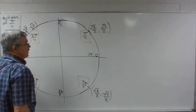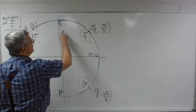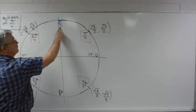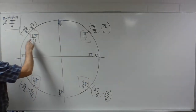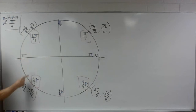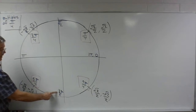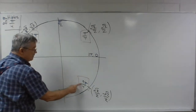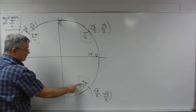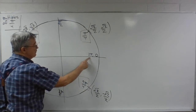If we work our way around the unit circle, we have pi over 4, 2 pi over 4 which is pi over 2, 3 pi over 4, 4 pi over 4 which is pi, 5 pi over 4, 6 pi over 4 which is 3 pi over 2, 7 pi over 4, and 8 pi over 4 which reduces to 2 pi.